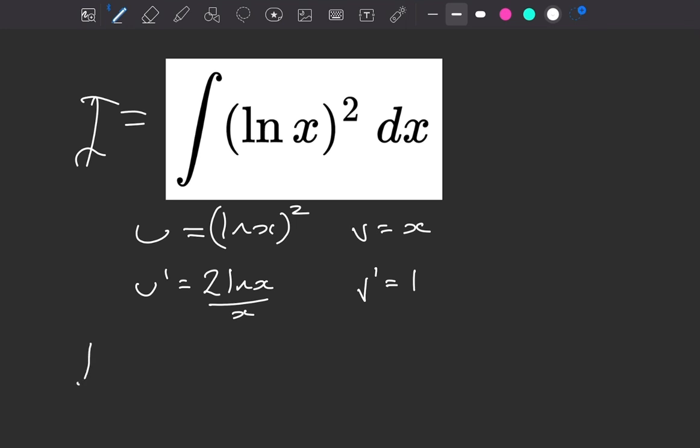Sticking this all together then, our integral becomes u times v, so x times the natural log of x all squared, take away the integral of u dash v. So you can see how the 1 over x here and the x there will cancel off. So all we're going to be left with is our 2 times the natural log of x.